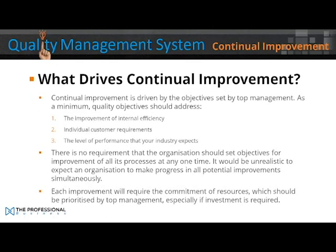What drives continual improvement? Continual improvement is driven by the objectives set by top management. As a minimum, quality objectives should address: the improvement of internal efficiency, individual customer requirements, and the level of performance that your industry expects. There's no requirement that the organisation set objectives for improvement for all of its processes at any one time — it would be unrealistic to expect an organisation to make progress in all potential improvements simultaneously. Each improvement will require the commitment of resources, which should be prioritised by top management, especially if investment is required.